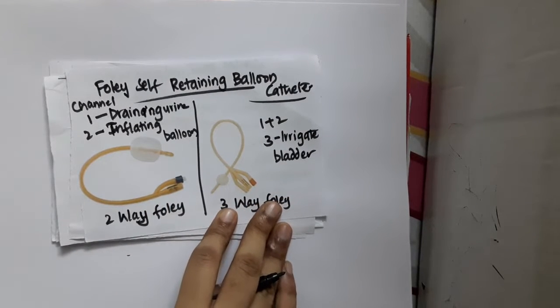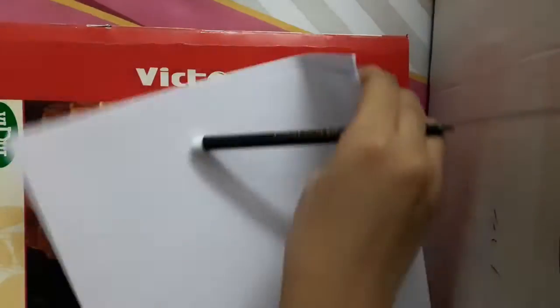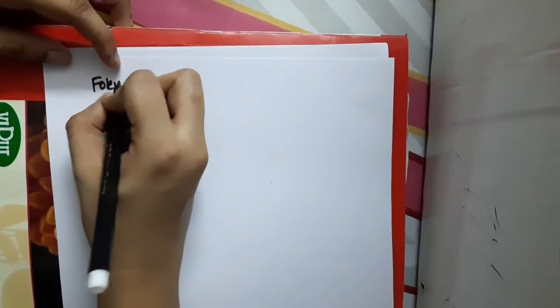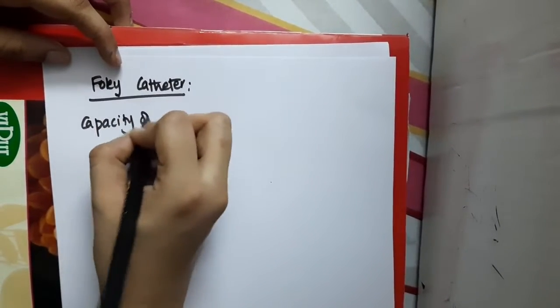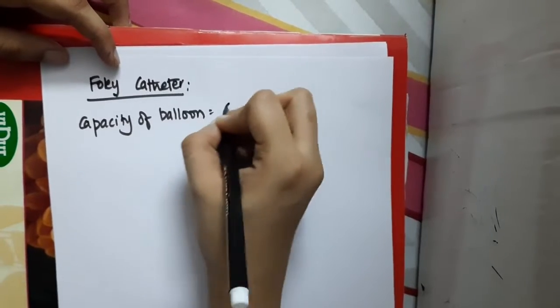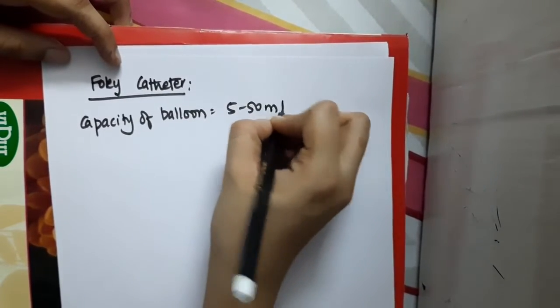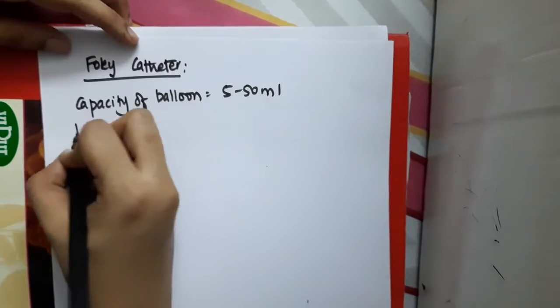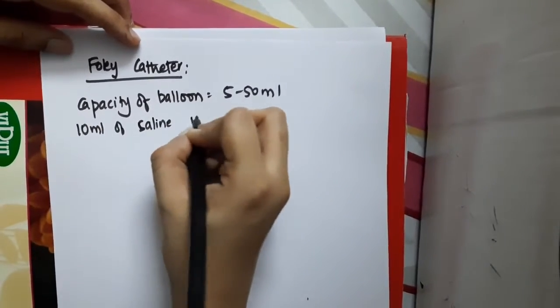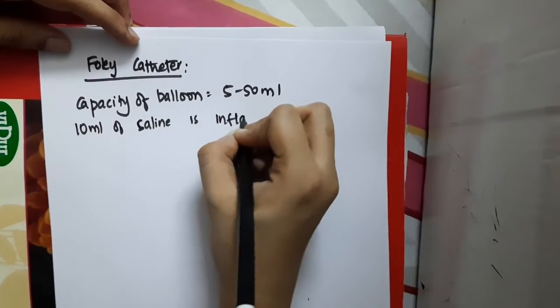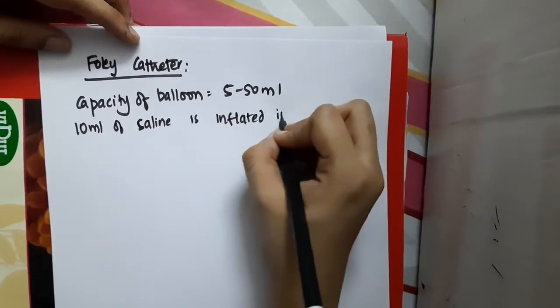Now let us learn some important points about Foley's catheter. The balloon capacity is around 5 to 50 ml, and 10 ml of saline is inflated in the balloon for self-retaining purposes.